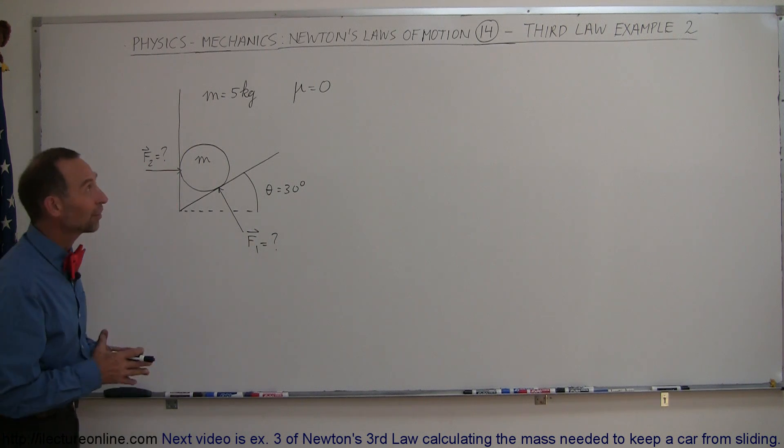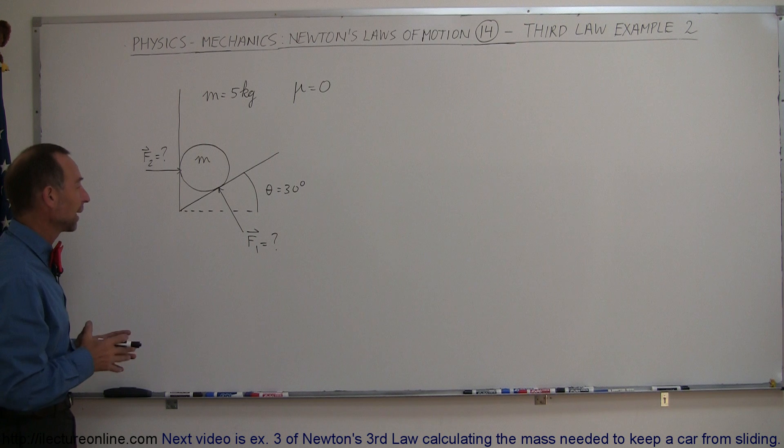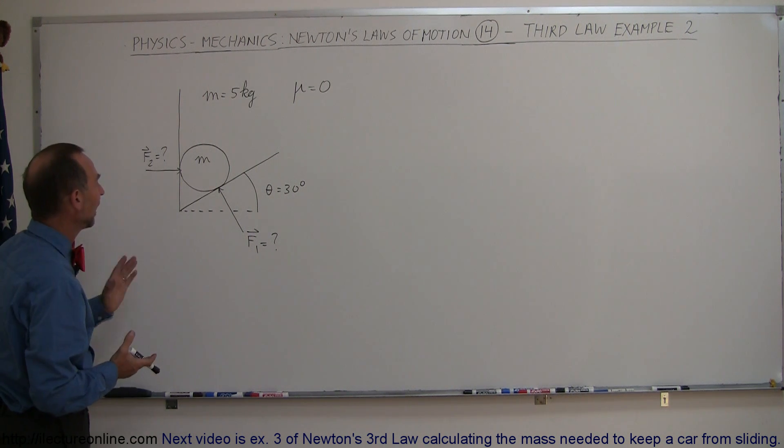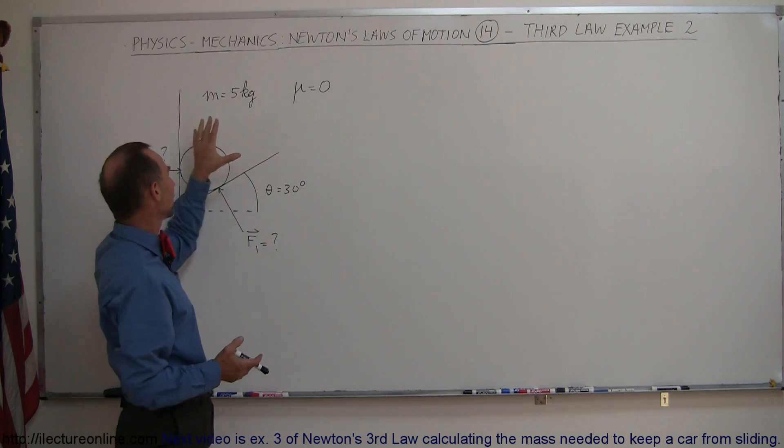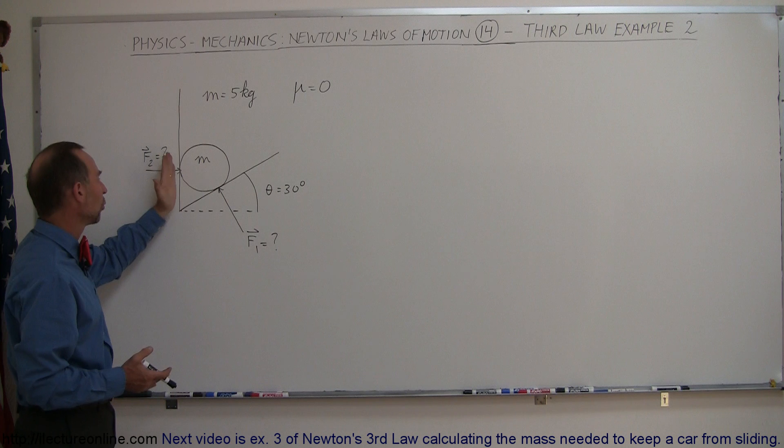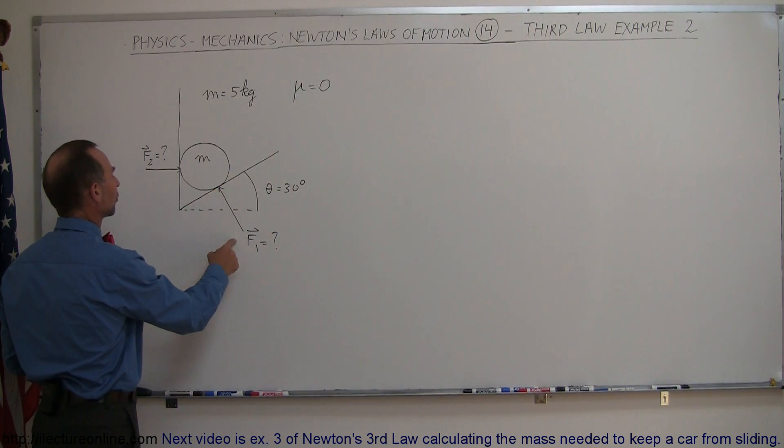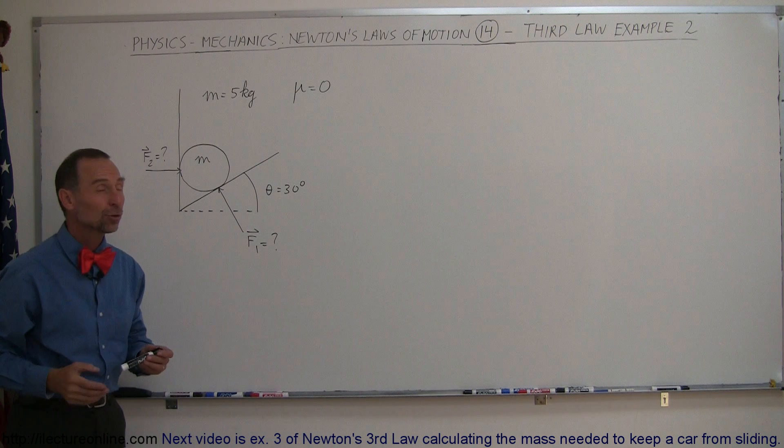Here's our second example of how to utilize Newton's third law concepts. Let's say we have a wedge-shaped object, and in it we place a ball, assuming there's no friction between the ball and the edges or walls of this wedge. What are the forces, the reactionary forces F1 and F2 of this wedge pushing back? How do you do that?